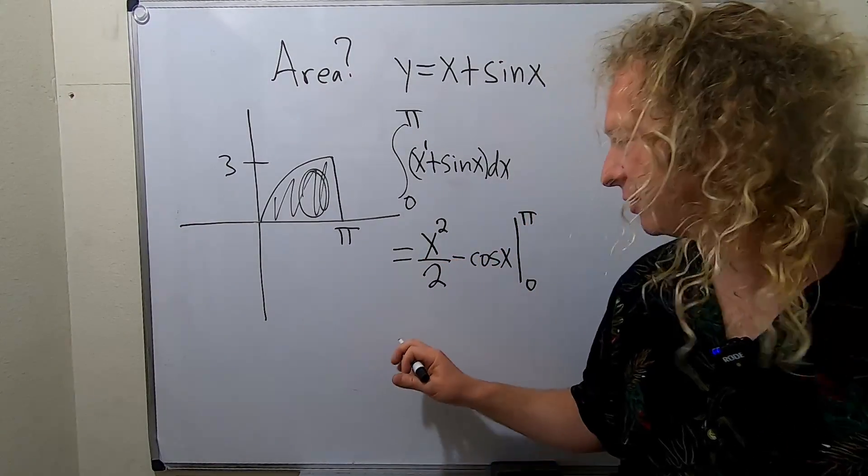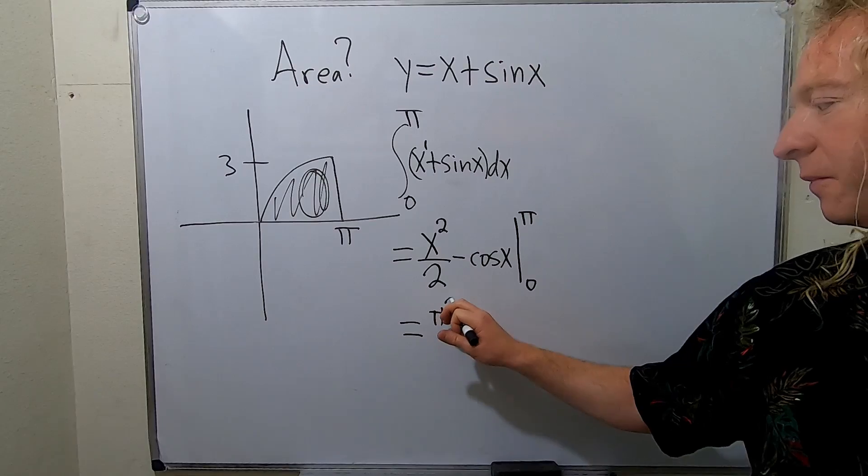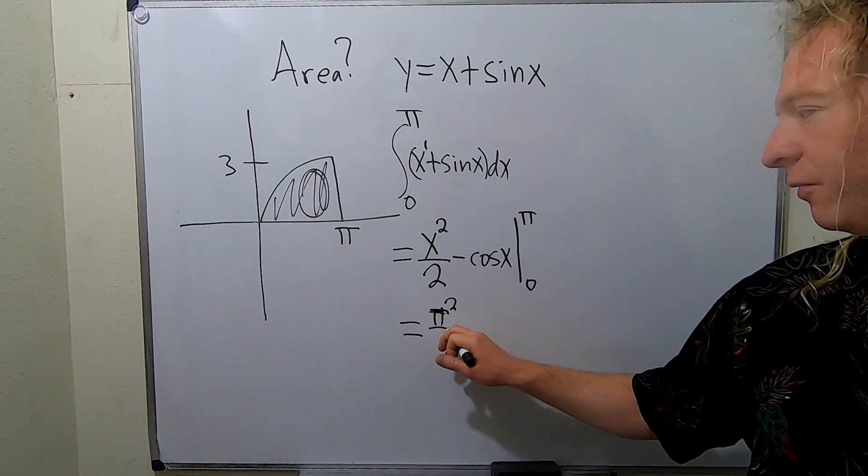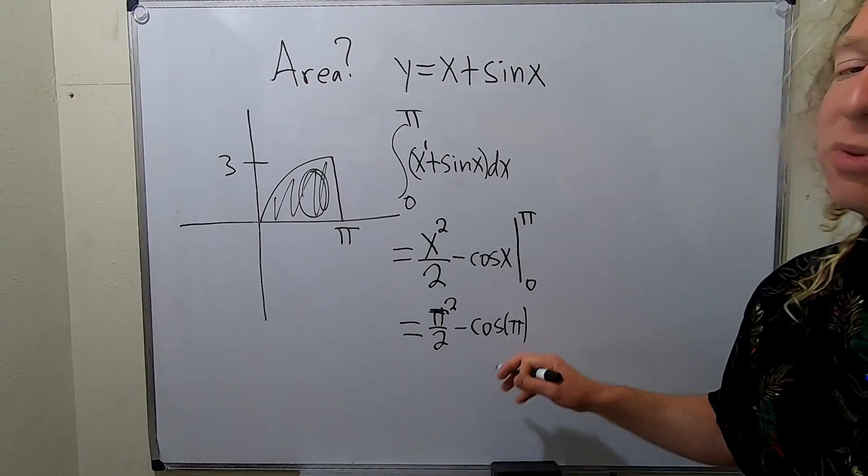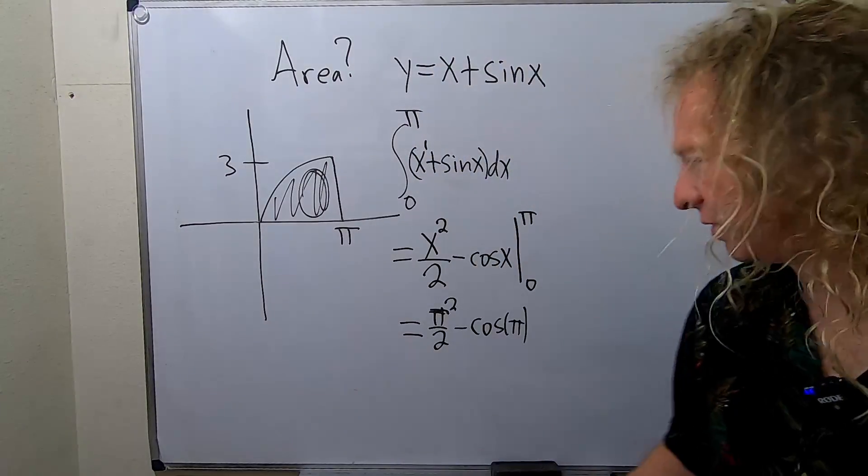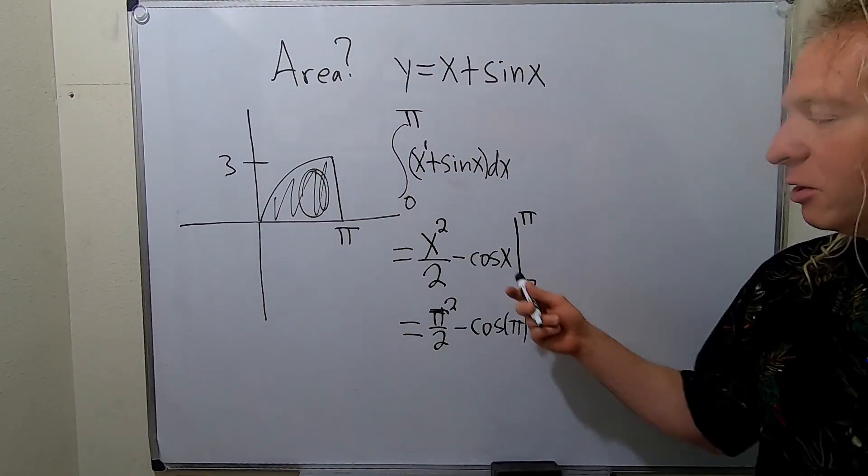All right so first we plug in the pi. So this is equal to pi squared over 2 minus cosine of pi. You always plug in the pi first and then minus, and now you plug in the zero.